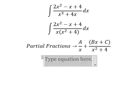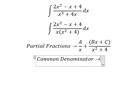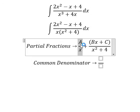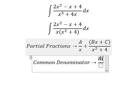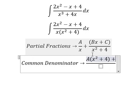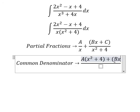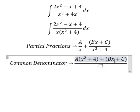Next we do common denominator. This one is missing x squared plus 4, so capital A multiplied by x squared plus 4. This one is missing x, so Bx plus C multiplied by x.